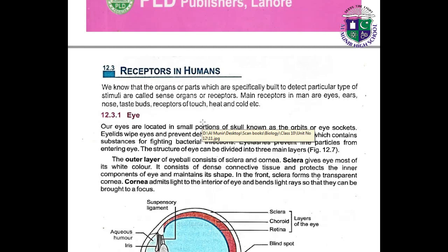The main receptors in man are: eyes, ears, nose, taste buds, and receptors of touch, heat and cold. Through eyes we can detect visual stimuli; ears are for listening; nose is related to smell; taste buds to taste; and receptors of touch help us feel touch, heat and cold. These are the receptors present in humans.